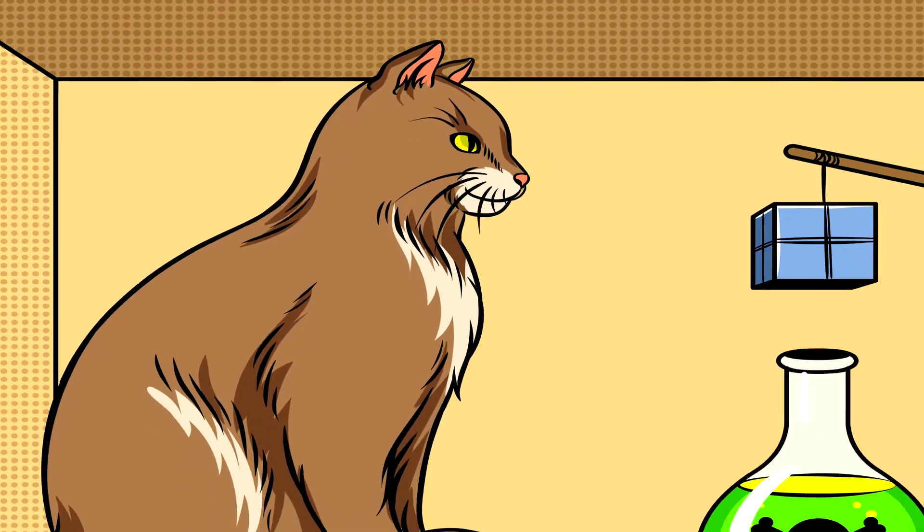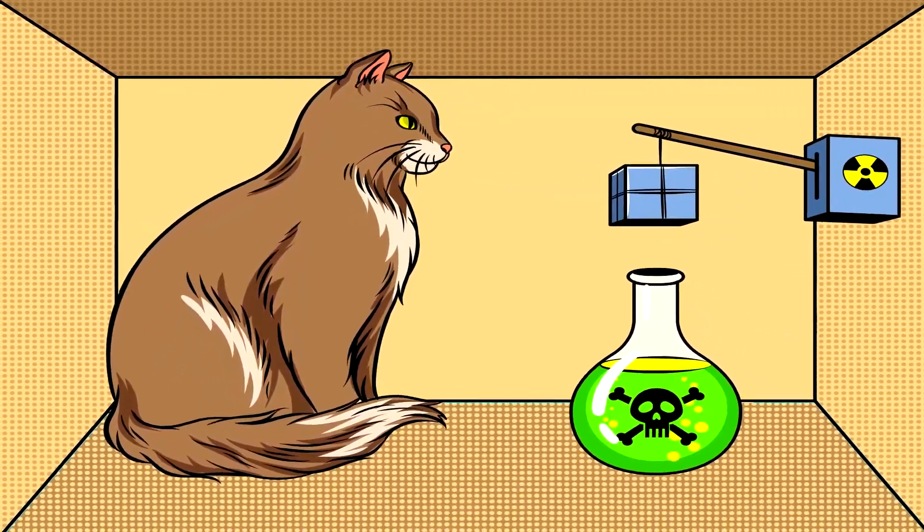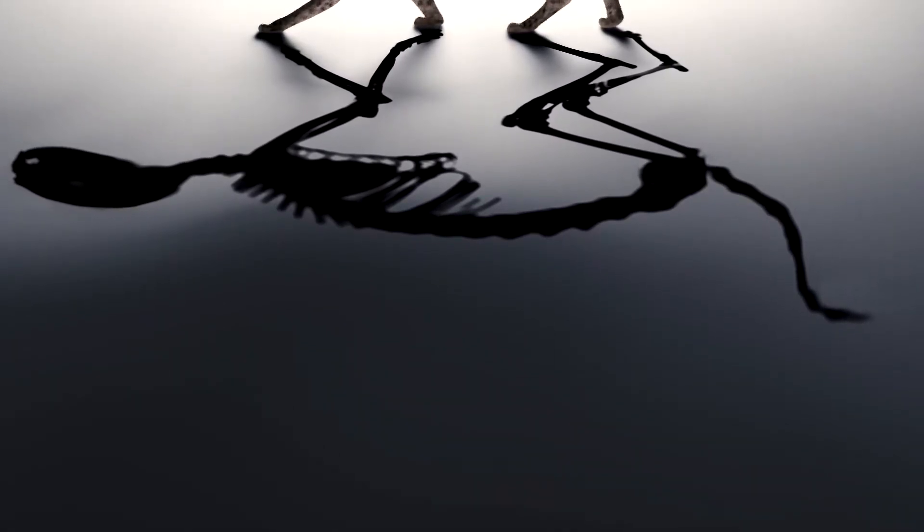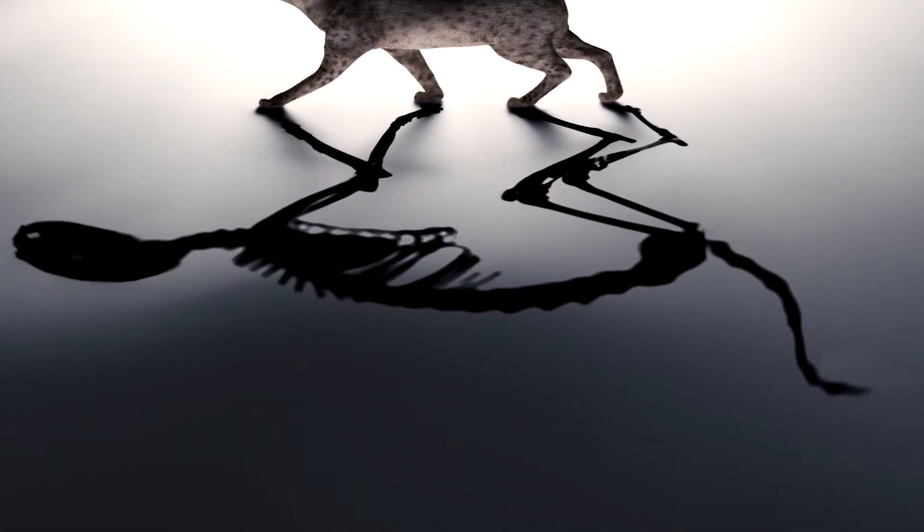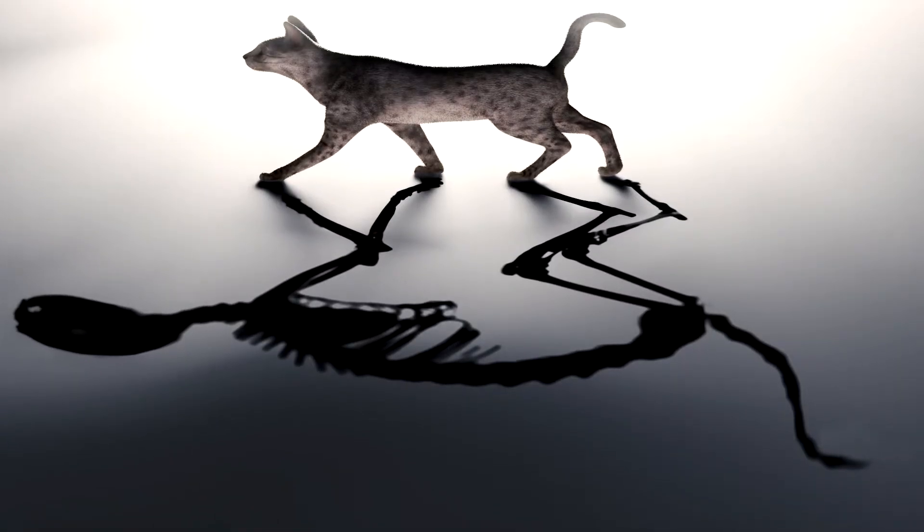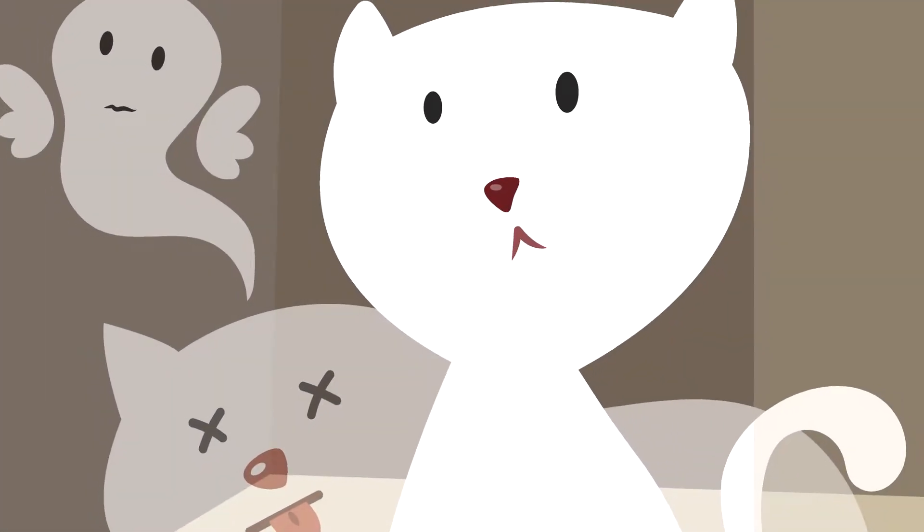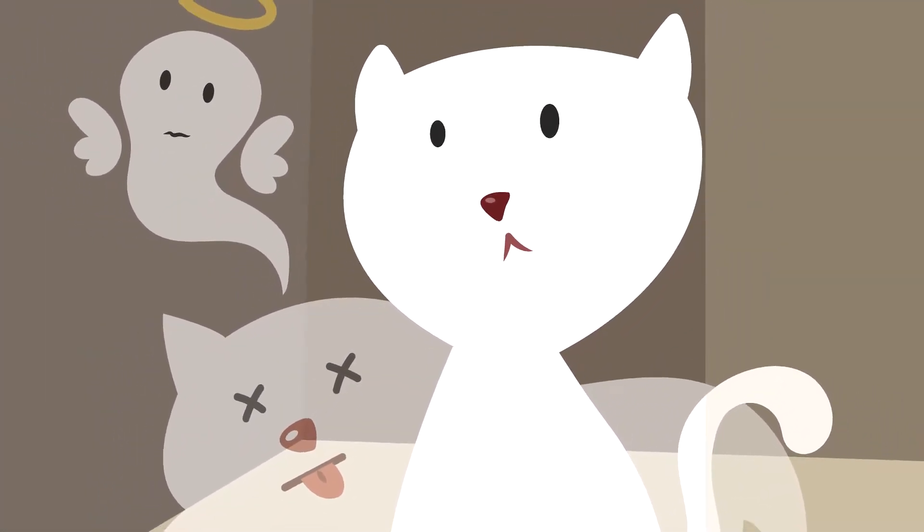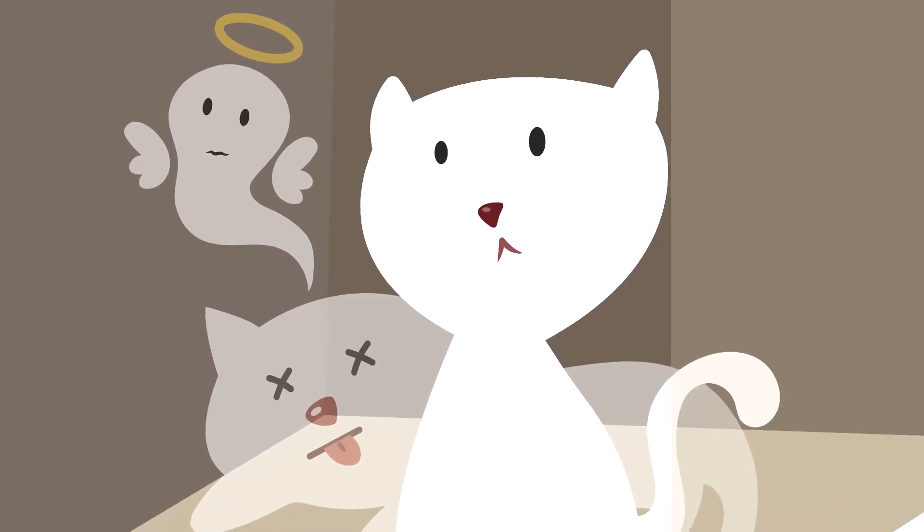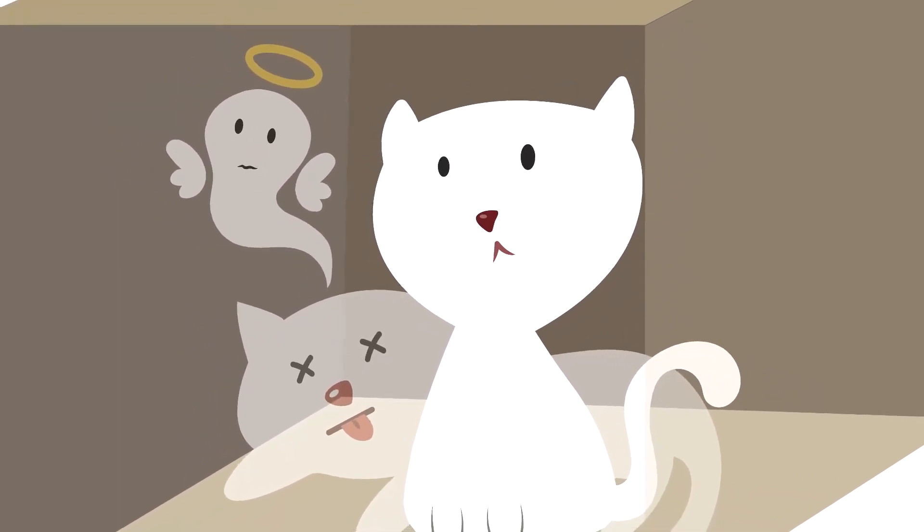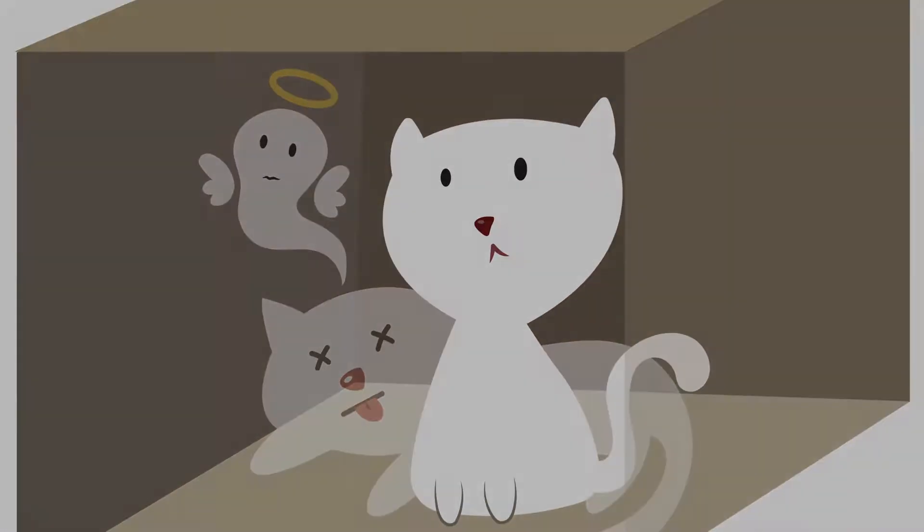You do not know whether the poison will be released or not until you open the box. In traditional physics, one would assume that the cat will be either dead, due to the poison gas being released, or alive. According to quantum physics, however, the cat is actually in a superposition of both possibilities until you open the box. Upon opening the box and observing the cat, one of the potentials will become reality.